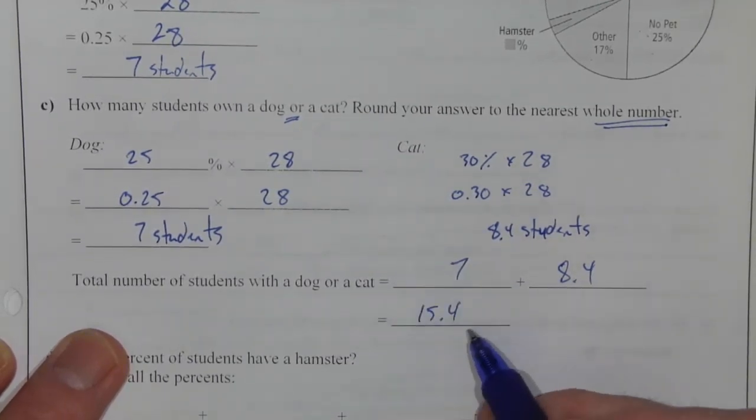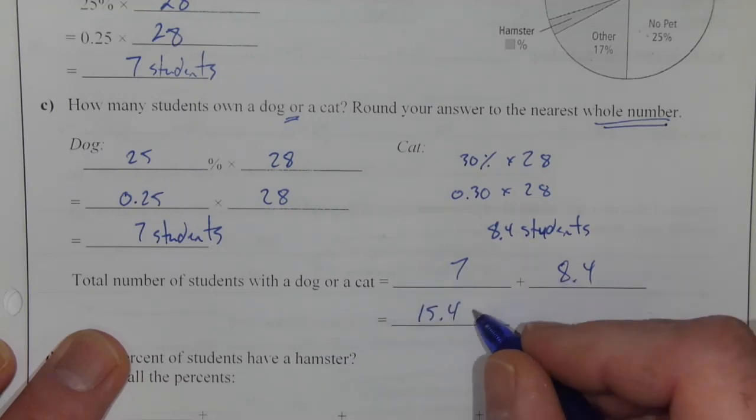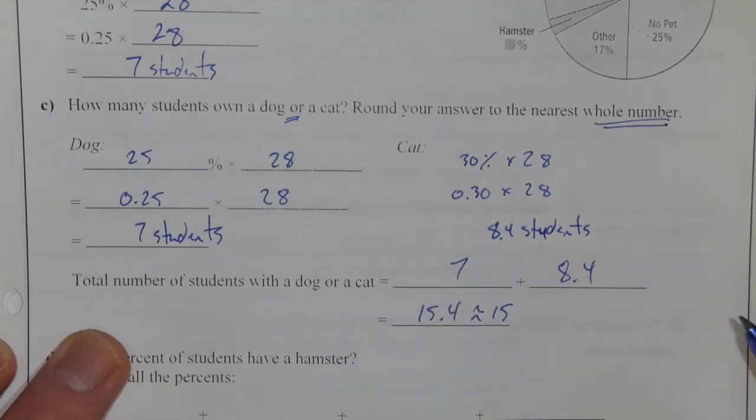Now, we can't have 0.4 of a student. Students can be only whole numbers when we're counting them. So 15.4 is going to get rounded down to 15 students,